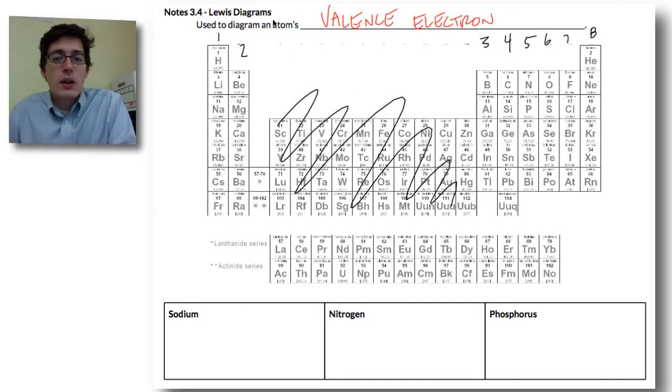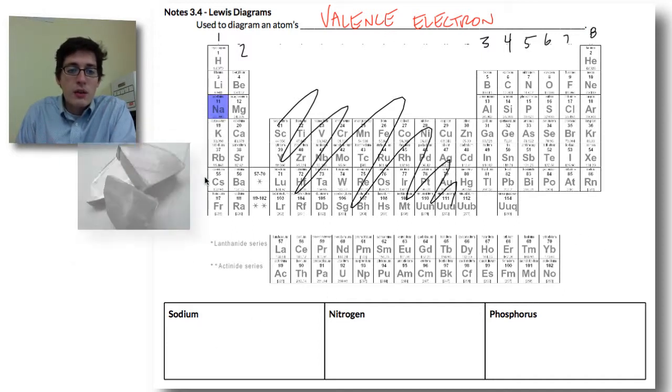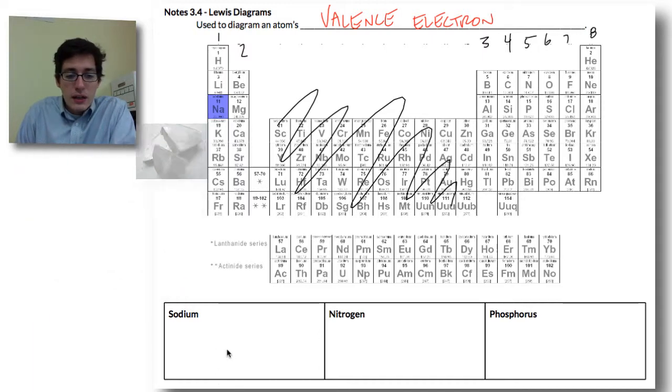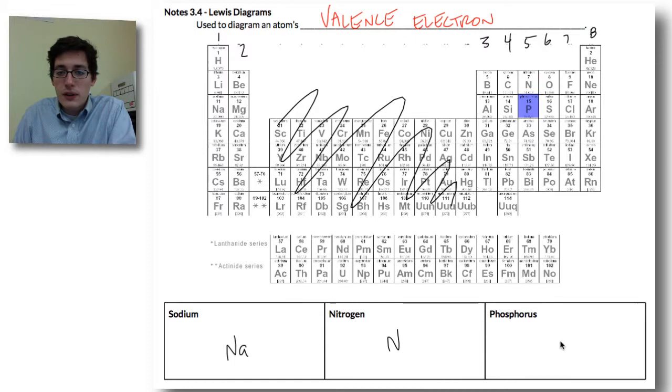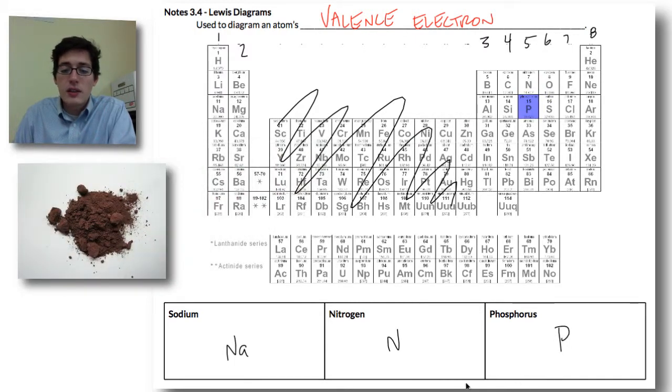So if we're using Lewis diagrams to show the valence electrons of an atom, all we need to do is look at our group number. It'll tell us how many valence we have. So for example, our first element is sodium. Sodium is right here highlighted on your screen, number 11. So our symbol is Na. Nitrogen is symbol N, number 7 highlighted on your screen right now, and phosphorus is P, number 15, and that's also highlighted.